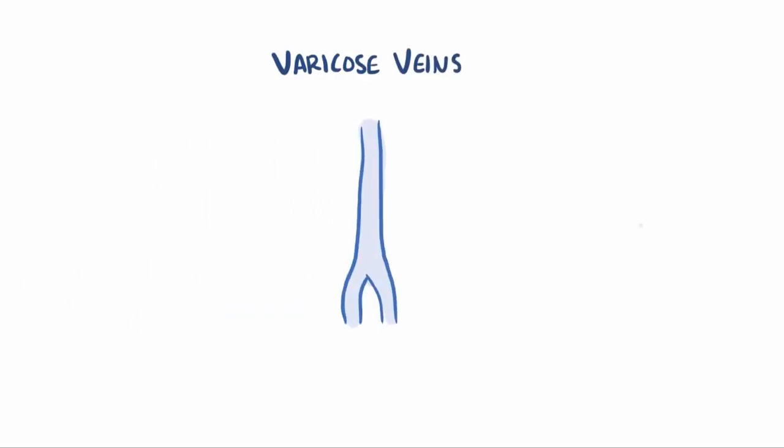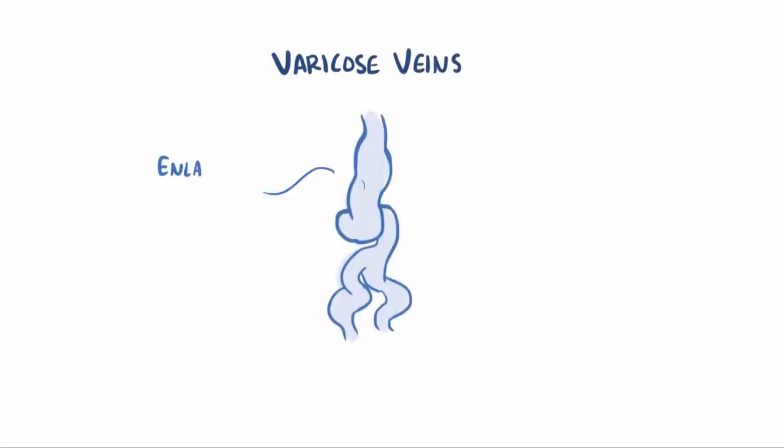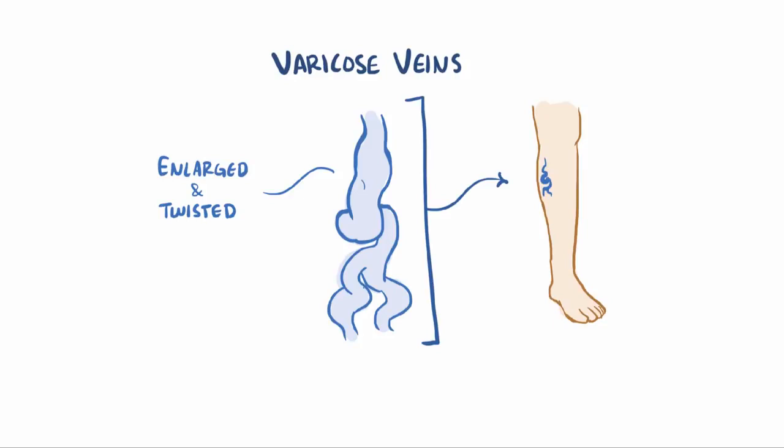Varicose veins are veins that have become enlarged and twisted, and this most commonly happens in the veins of the leg.